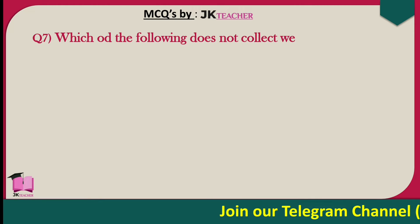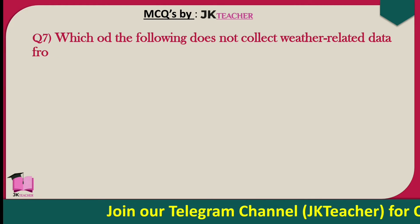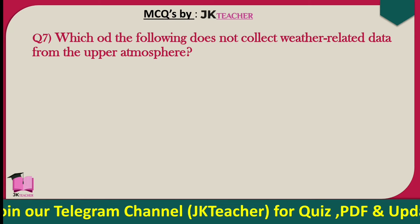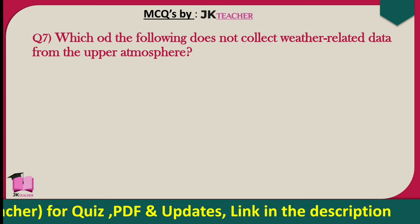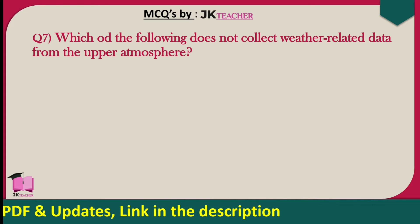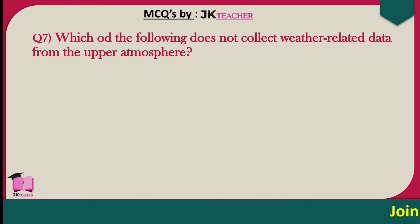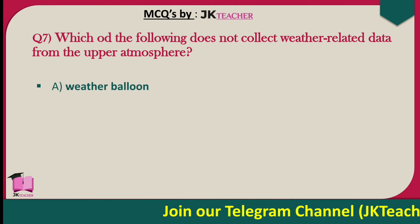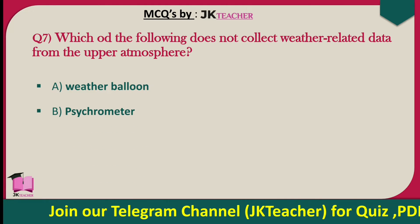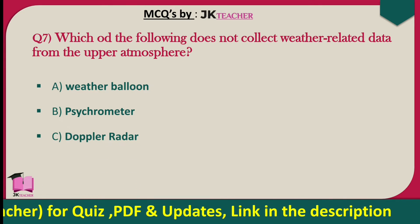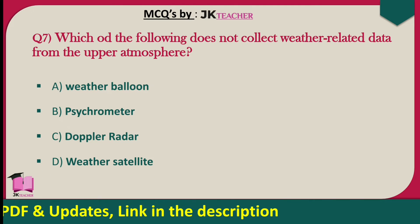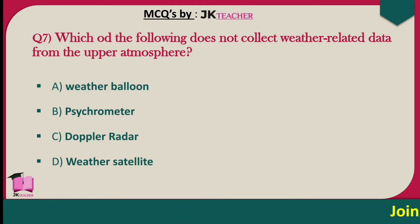Which of the following does not collect weather-related data from the upper atmosphere? Options are weather balloon, psychrometer, Doppler radar, and weather satellite. The right answer is option B — psychrometer.